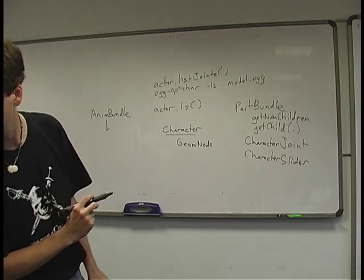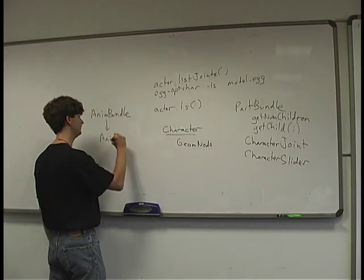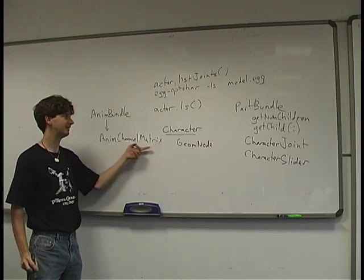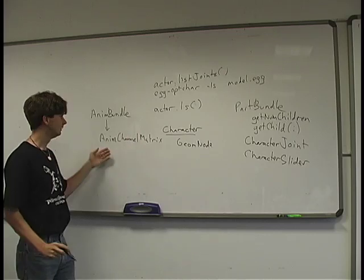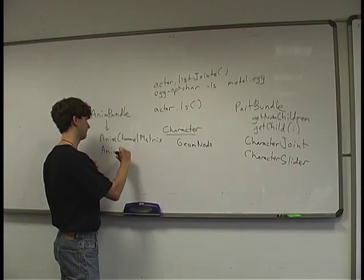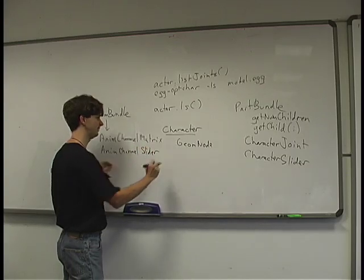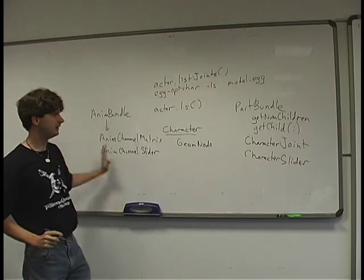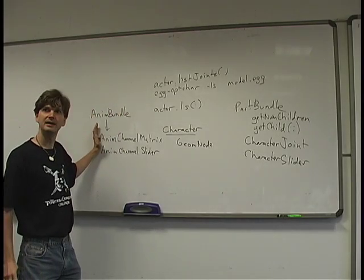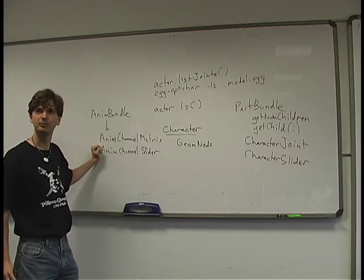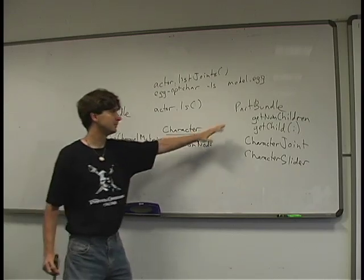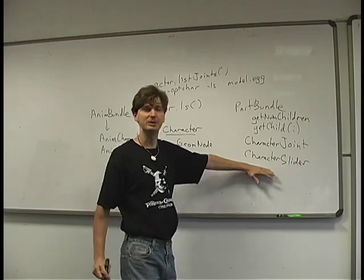Iterating through the AnimBundle recursively, you'll find AnimChannelMatrix entries — more specifically a subclass like AnimChannelMatrixXfm — which stores a matrix per frame. There's also an AnimChannelScalar which stores a floating-point number per frame for sliders. This hierarchy must exactly match your PartBundle hierarchy. It's fundamentally a table: one matrix per frame per joint, and slider poses per frame. This is a static table, so you can reuse the same AnimBundle for multiple different characters, but every character instance has its own PartBundle hierarchy because transforms change per frame.